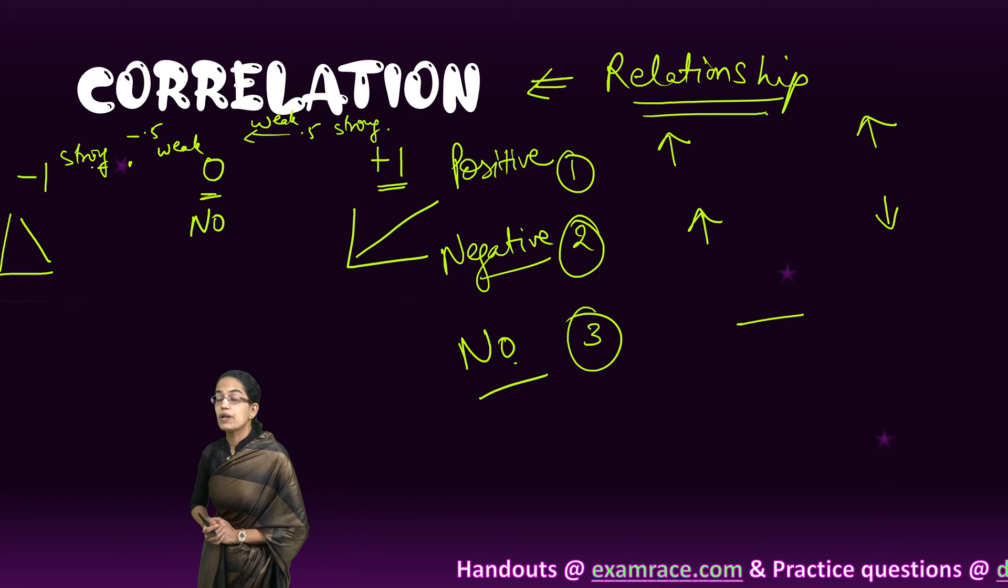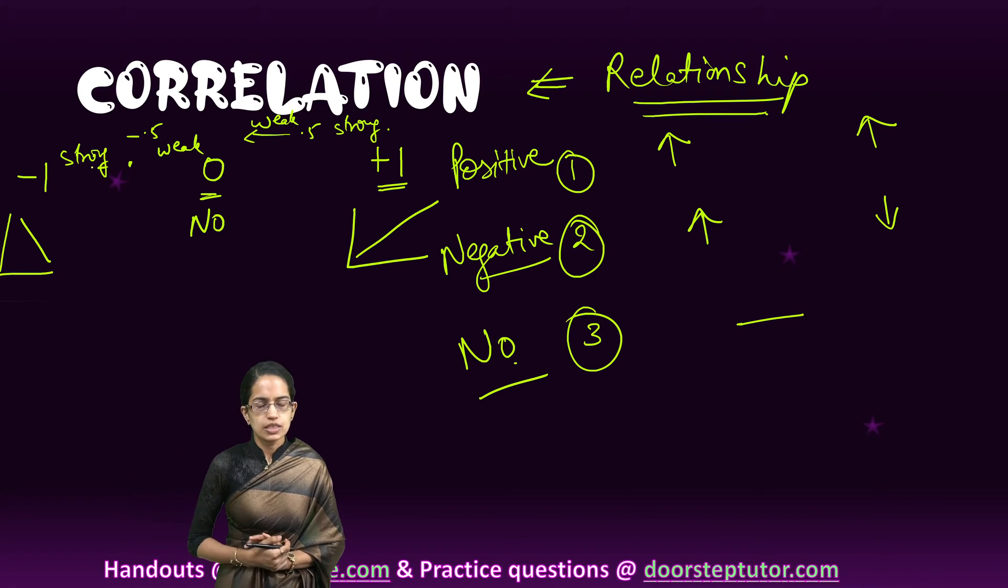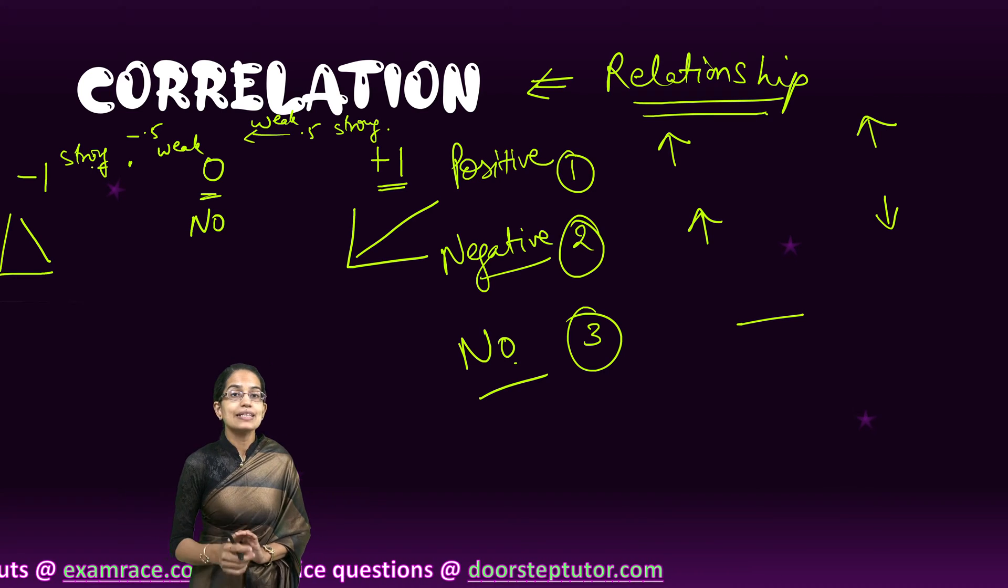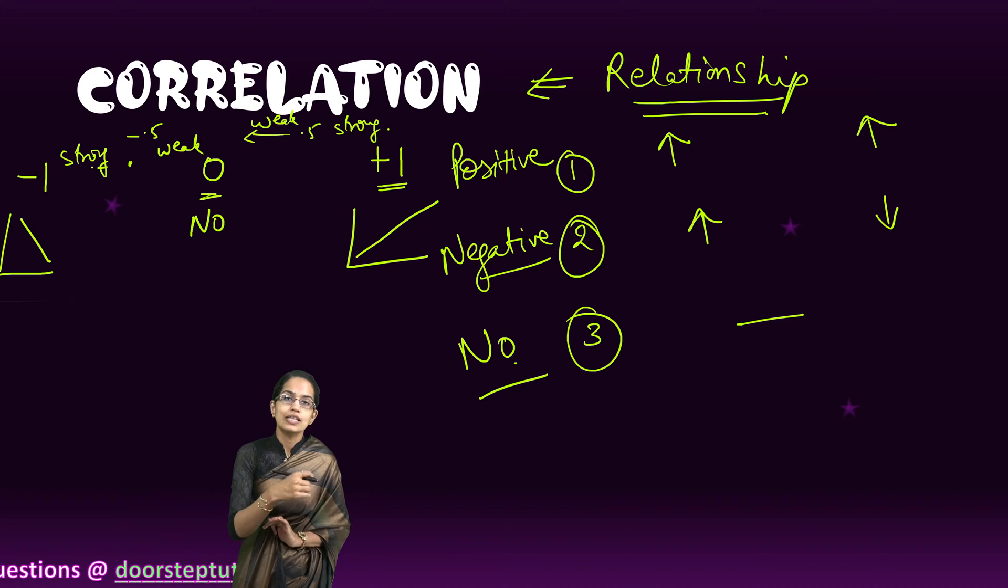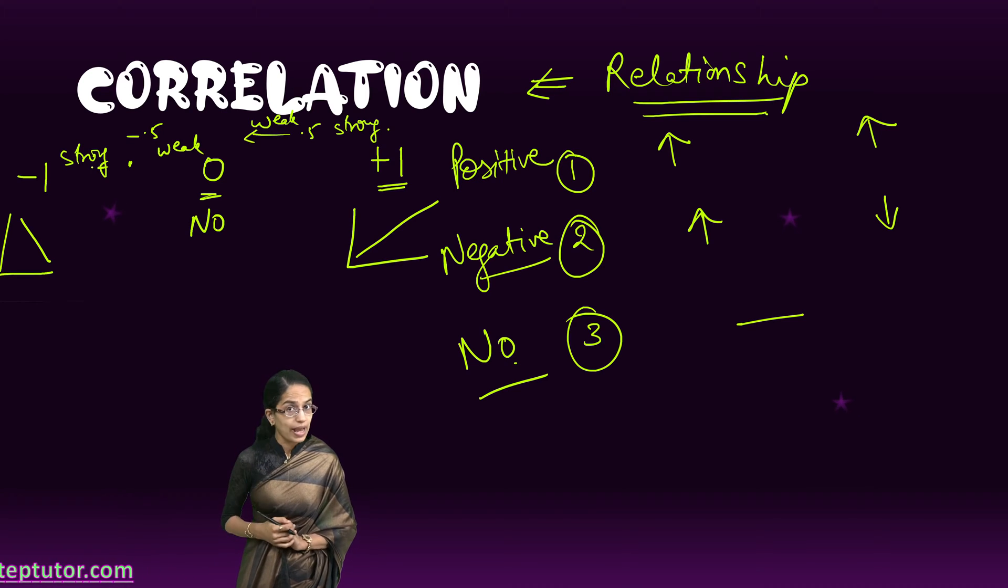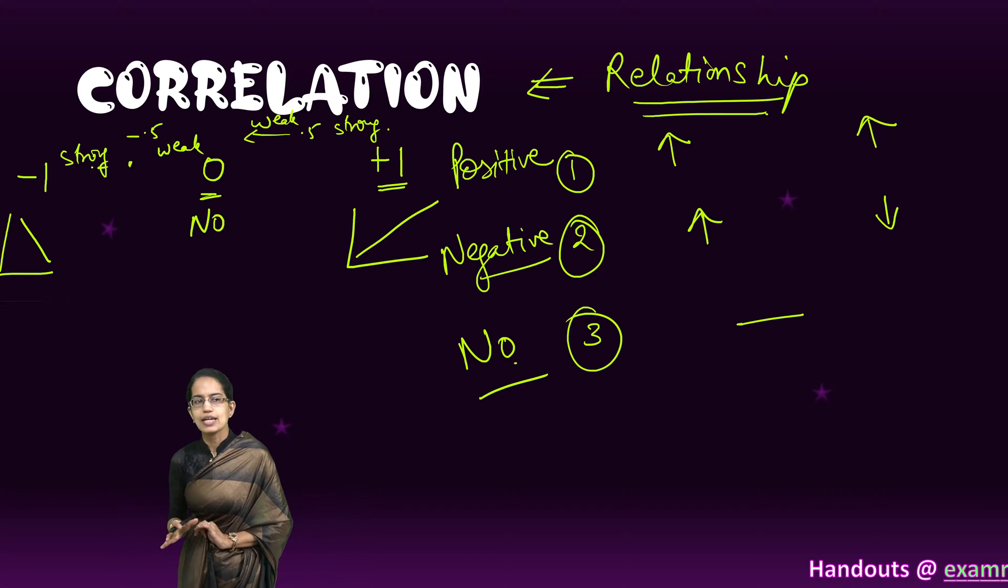Let me just cite an example: 0.8 is a strong positive correlation. However, if I say minus 0.7, this is a strong negative correlation since it's a minus sign. That's a broad idea to understand correlation.